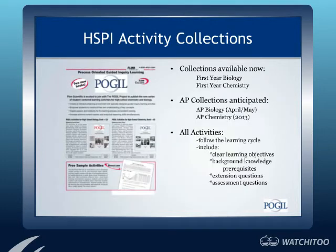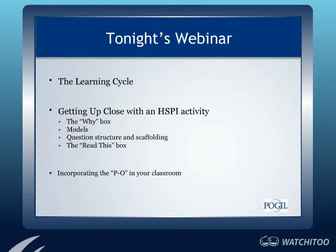The HSPI had three main goals: to develop activity collections for high school use, to train high school teachers in using POGIL and sharing the methodology, and to develop a network of implementers. We are now wrapping up after three years with the publication of these materials. We currently have two collections: one for first-year biology and one for first-year chemistry, with AP collections coming soon. I'll now pass the torch to Christine to share our goals for the content portion of our evening.